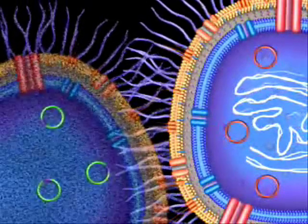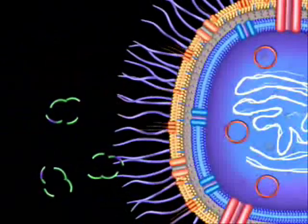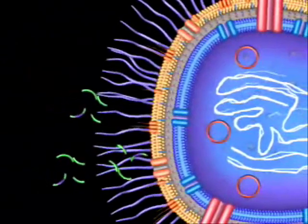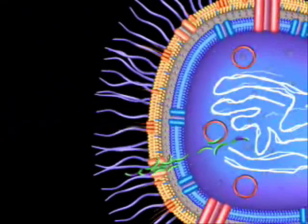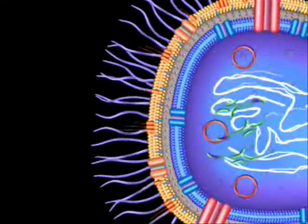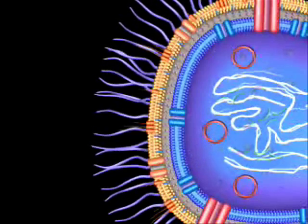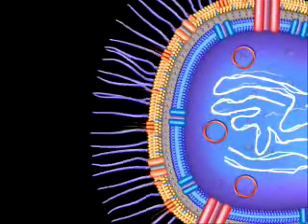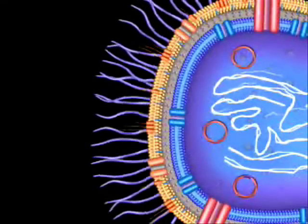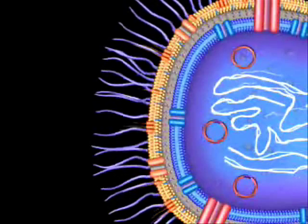When cells die and break apart, DNA can be released into the surrounding environment. Other bacteria in close proximity can scavenge this free-floating DNA and incorporate it into their own DNA. This DNA may contain advantageous genes, such as antimicrobial resistant genes, and benefit the recipient's cell.